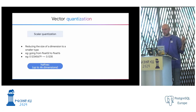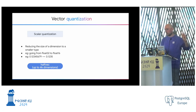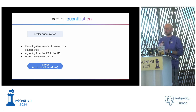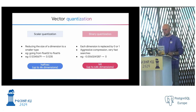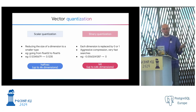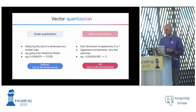There are two methods of quantization. Scalar quantization takes a float and stores it on two bytes instead of four, halving the size. This gives access to a new data type — 'half_vec' for half-vector — allowing up to 4,000 dimensions. Binary quantization is even more aggressive: each float is replaced with a zero or a one, which sounds extreme because we lose a lot of precision, but we can go up to 64,000 dimensions using the 'bit' data type.